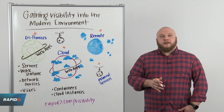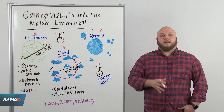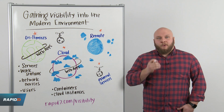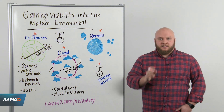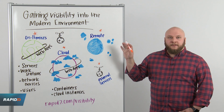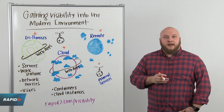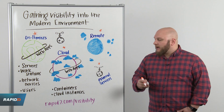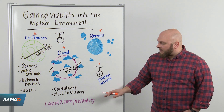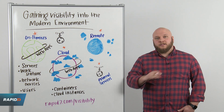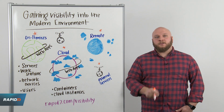Here at Rapid7, we're all about helping you securely advance. One of the most important ways to advance securely is to start by getting visibility into your complete environment. We'd be happy to help — if you'd like to know more, head on over to rapid7.com/visibility. I hope this week is out of this world for you. That's all we have this time — we'll catch you next time. Bye.